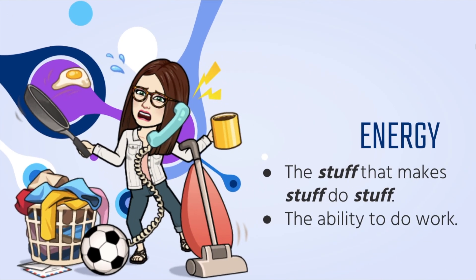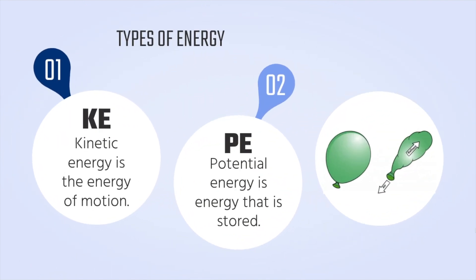Energy — the stuff that makes stuff do stuff. It's the ability to do work. There are two types of energy: kinetic energy, which is the energy of motion, and potential energy, which is the energy that is stored.